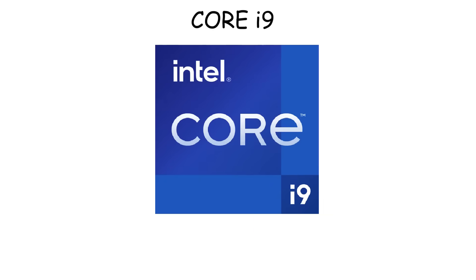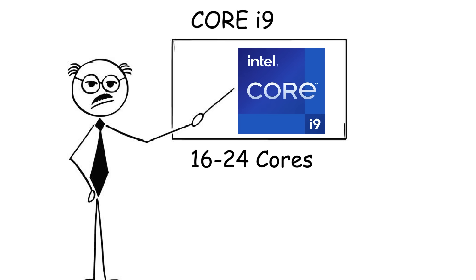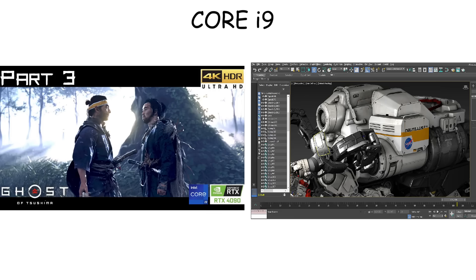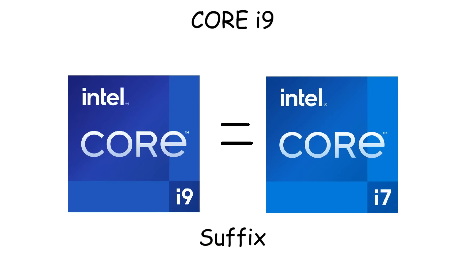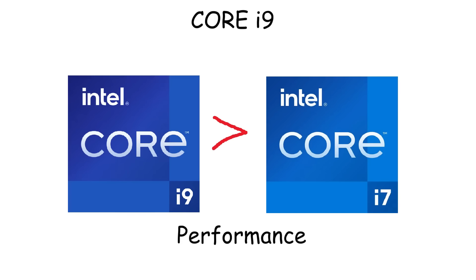Intel Core i9 is Intel's flagship processor built for professionals and tech enthusiasts. It has 16 to 24 cores, which makes it very powerful for heavy workloads like studio-level 3D modeling, reaching ultra-graphic settings in heavy AAA games, and 4K video editing. The suffix is the same as Core i7, and what makes it different is that Core i9 is simply more powerful in terms of performance.